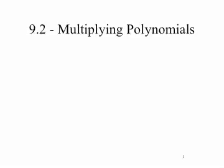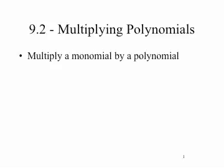We're going to break this up into three different areas of learning. The first is how to multiply a monomial — that is, an expression with a single term — by a polynomial, an expression with many terms. Here, we're simply going to use the distributive property and the properties of exponents we learned in Chapter 8.